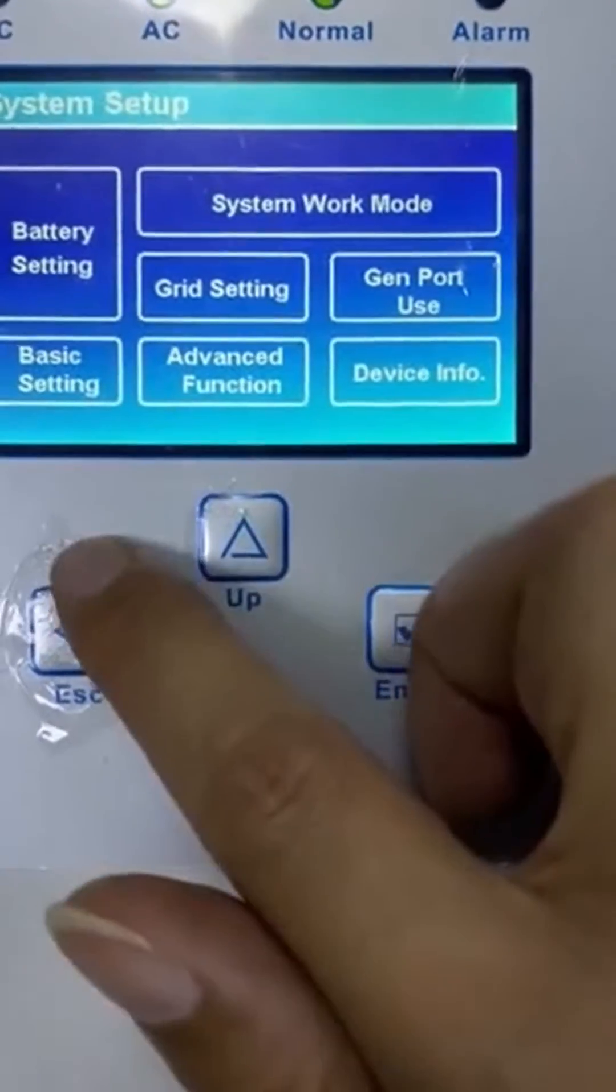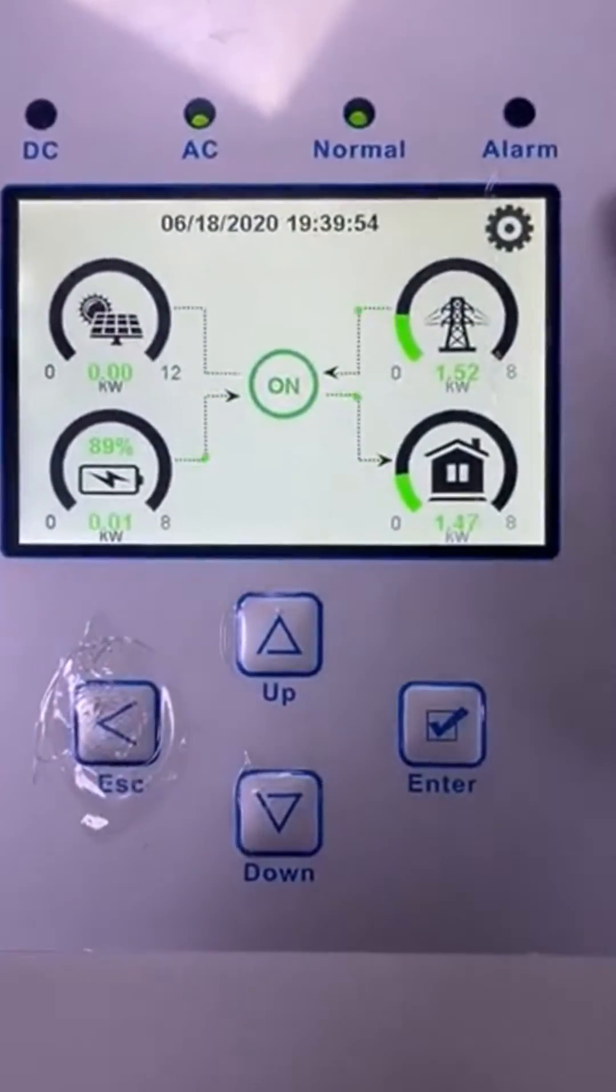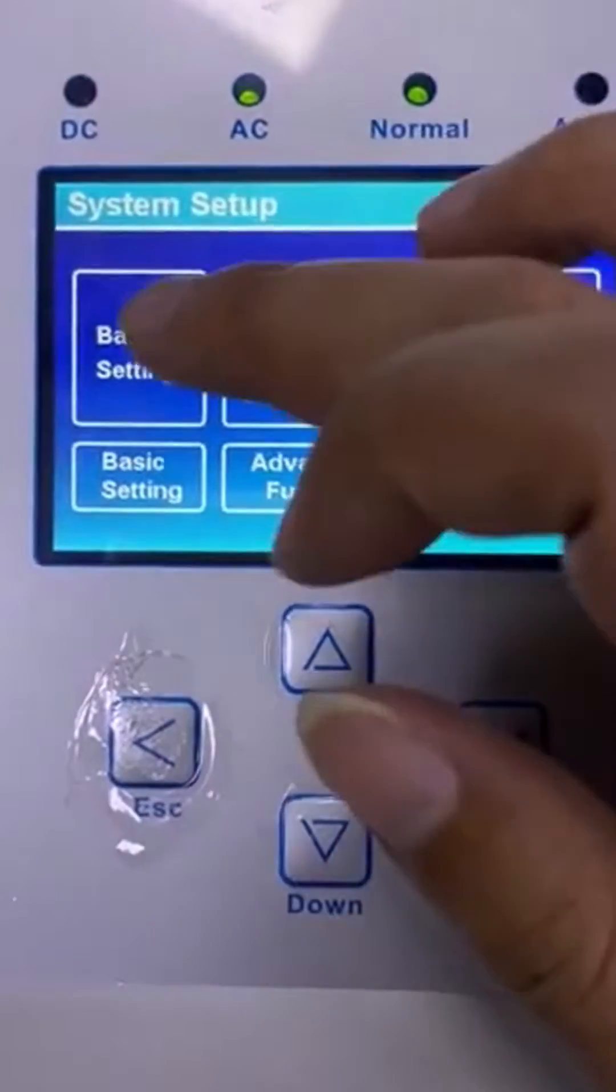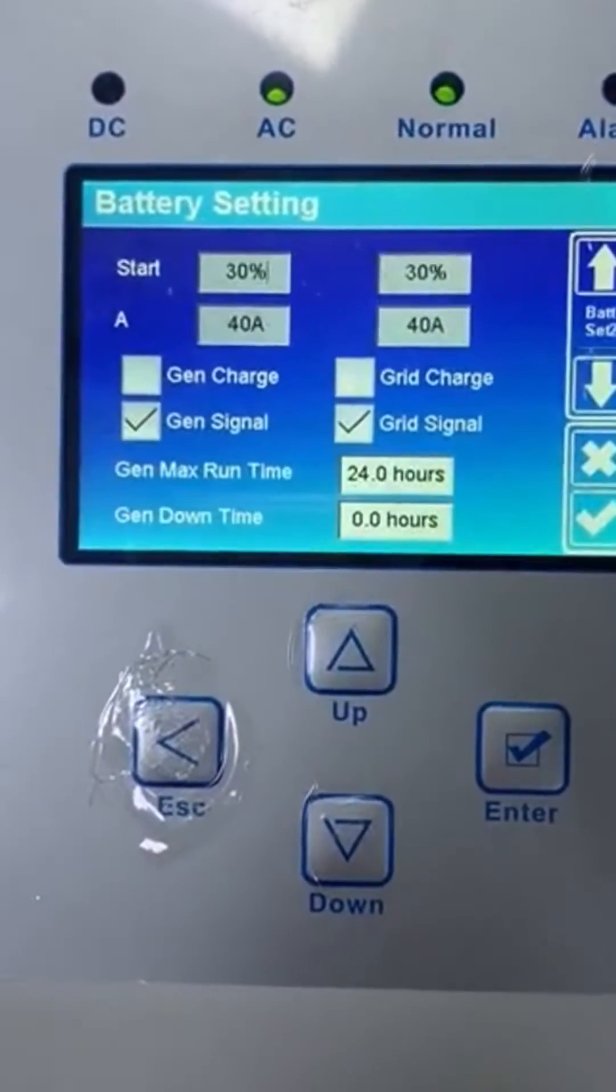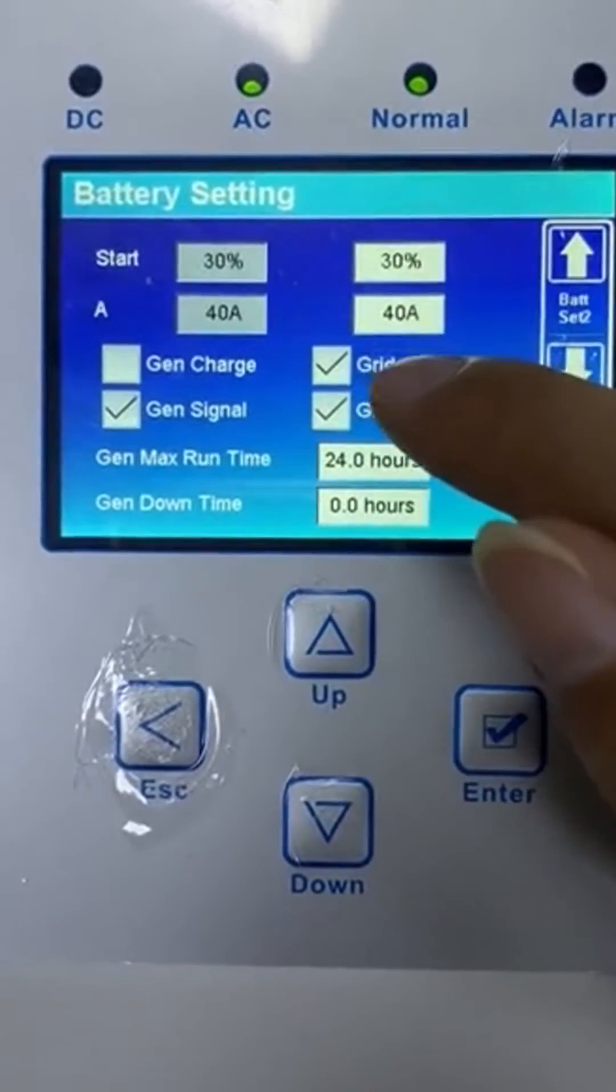Let's go back to the home page. We also need to check - there is another switch here. Yes, we also need to make sure this grid charge is enabled.